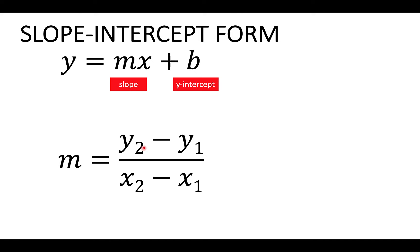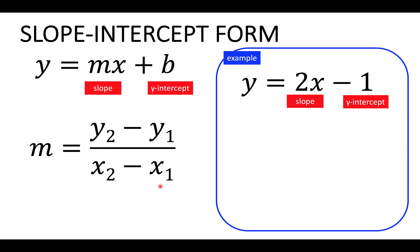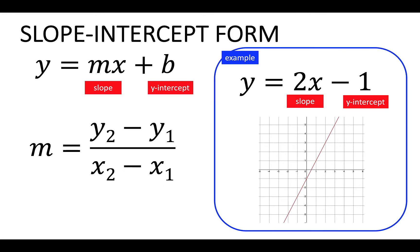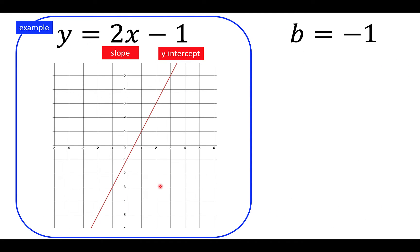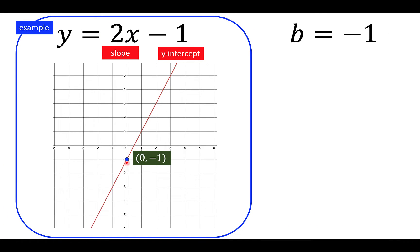Another way of looking at this is the rise over the run. For example, if we are given the equation y equals 2x minus 1, the slope is 2 and the y-intercept is negative 1. Graphically, the y-intercept b equals negative 1 is the point of intersection between the y-axis and the red line. The coordinate of that point is (0, negative 1), where x₁ is 0 and y₁ is negative 1. Notice that the y-intercept happens when x is 0. If you substitute x equals 0, we get y equals 2 times 0 minus 1, which equals negative 1.